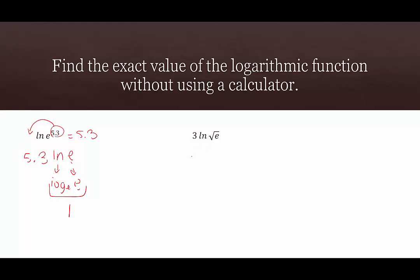In our final example, we have 3 times the natural log of the square root of e. We rewrite the square root as an exponent of 1/2: 3 times ln of e to the 1/2. Now we pull the 1/2 out in front and multiply it by 3: 3 times 1/2 is 3/2. So we have 3/2 times ln of e. ln of e equals 1, so this simplifies to 3/2. This has been several examples of simplifying logarithmic terms using the power to a power property.